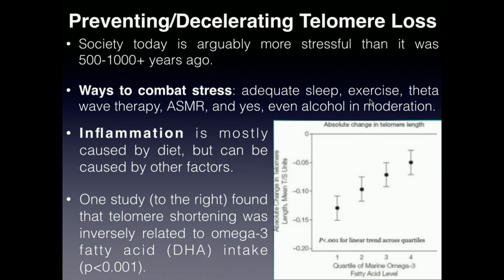Something that will help you sleep, prevent inflammation, and reduce stress is exercise. High-intensity exercise has been shown to reduce stress, and it has also been directly shown to prevent as much loss of the telomeres over time. So exercise is very important, and diet is also very important, which we'll come to shortly.